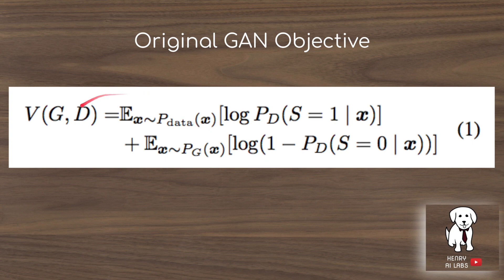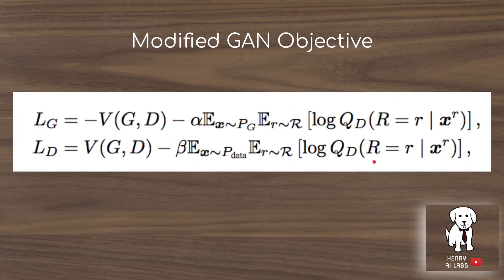The original GAN objective is a loss where you have the expectation that the sample is from the dataset and that you predicted that correctly, or that it's from the generator and you predicted that correctly. To modify it with the self-supervision task, in the generator loss you add the success of the discriminator in predicting the rotation on the generated image — X sampled from the generator, then the prediction of the rotation angle given this image.